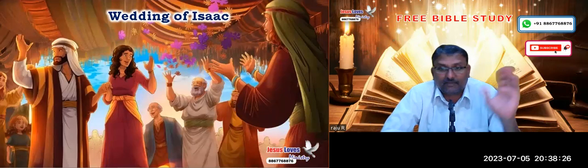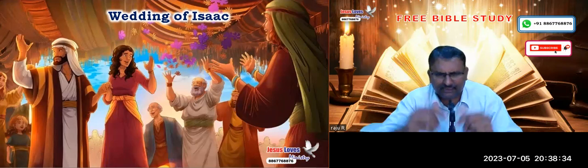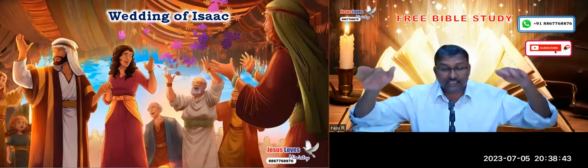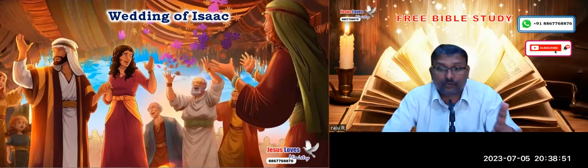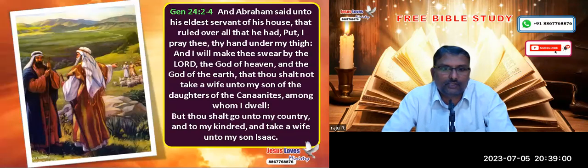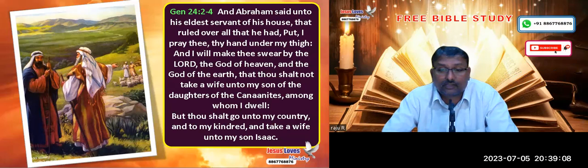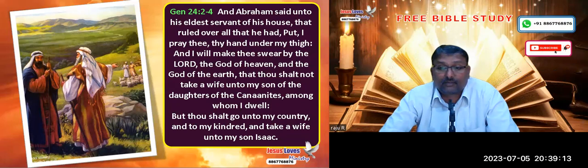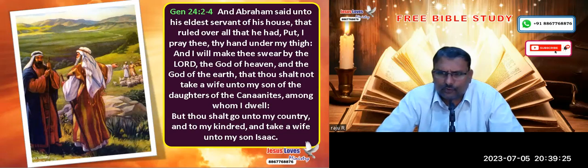Now you have got the picture — type and antitype, model and real thing, image and real. Let us continue a little further. As Isaac grew older, you know the marriage of Isaac. What did Abraham tell? 'You don't take a bride for my son Isaac from here — go to my hometown and take a bride.' His chief servant Eliezer was chosen. This is all given in Genesis 24:2-4.